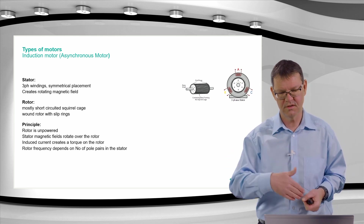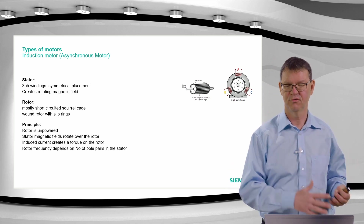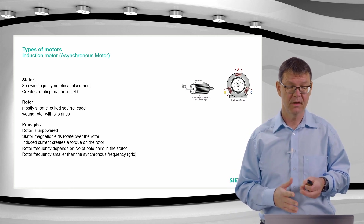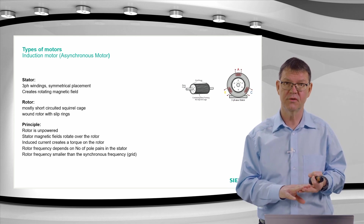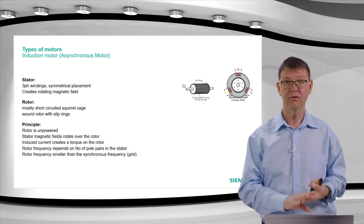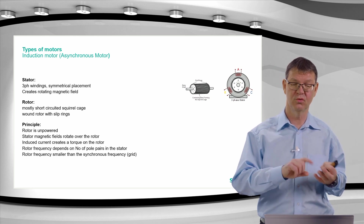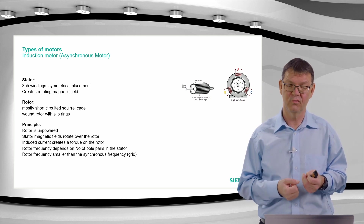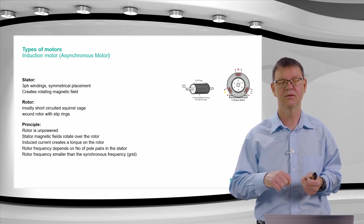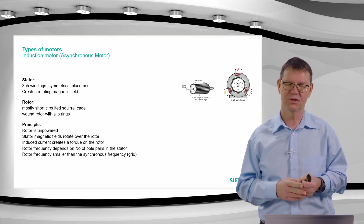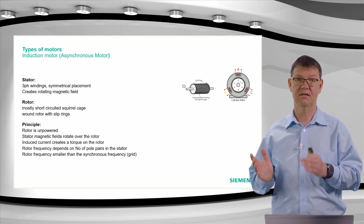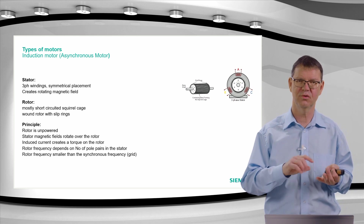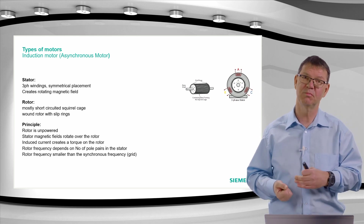The synchronous frequency divided by the number of pole pairs gives the frequency of the rotating magnetic field. The rotor itself does not rotate exactly at that synchronous frequency — it rotates at a lower frequency, because to drive the machine it needs a magnetic field rotating over the rotor to induce the voltage and current. Therefore it is called an induction motor or asynchronous motor: the rotor is not synchronous with the magnetic field but slower.